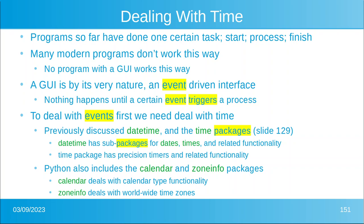Those events trigger the process. To deal with events, first we need to deal with time. We previously discussed the `datetime` and `time` packages — `time` really should be called `timer`, and `datetime` has sub-packages for dates and clock times. Python also includes the `calendar` and `zoneinfo` packages, which deal with things like worldwide time zones.